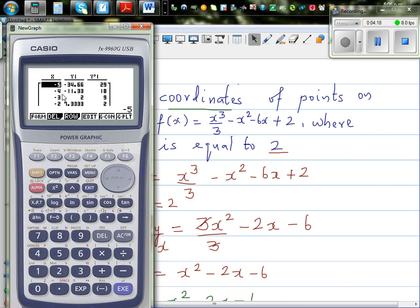I know at x is negative 2, I have found the y value, which is 7 and 1 third, and your gradient is 2. So that's confirmed.